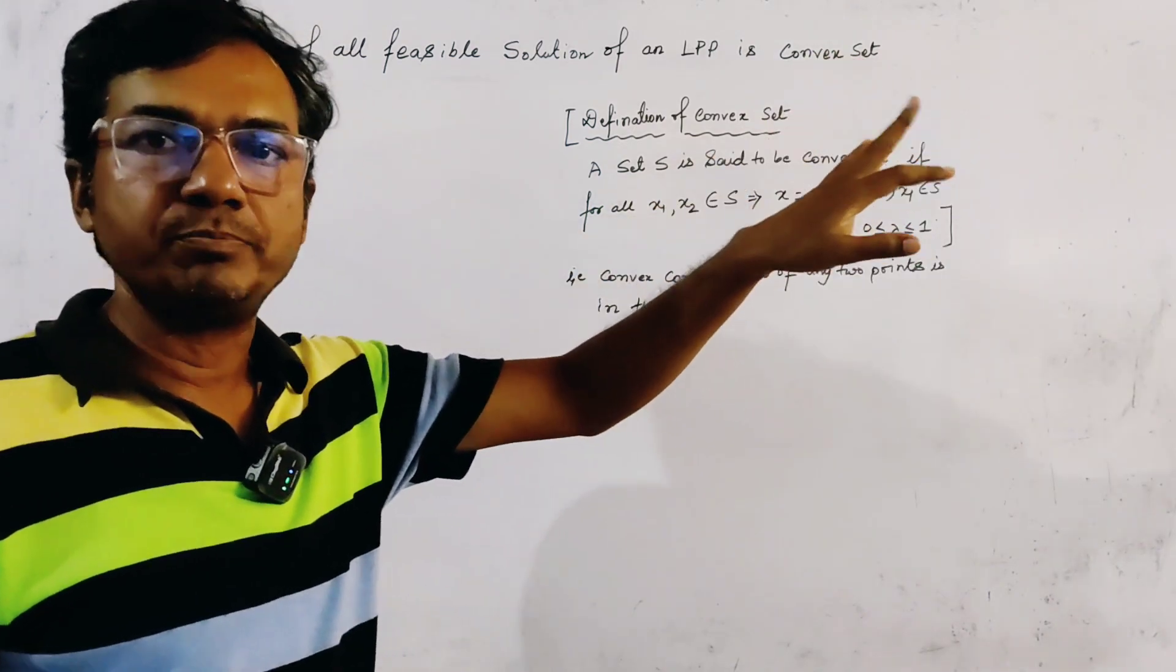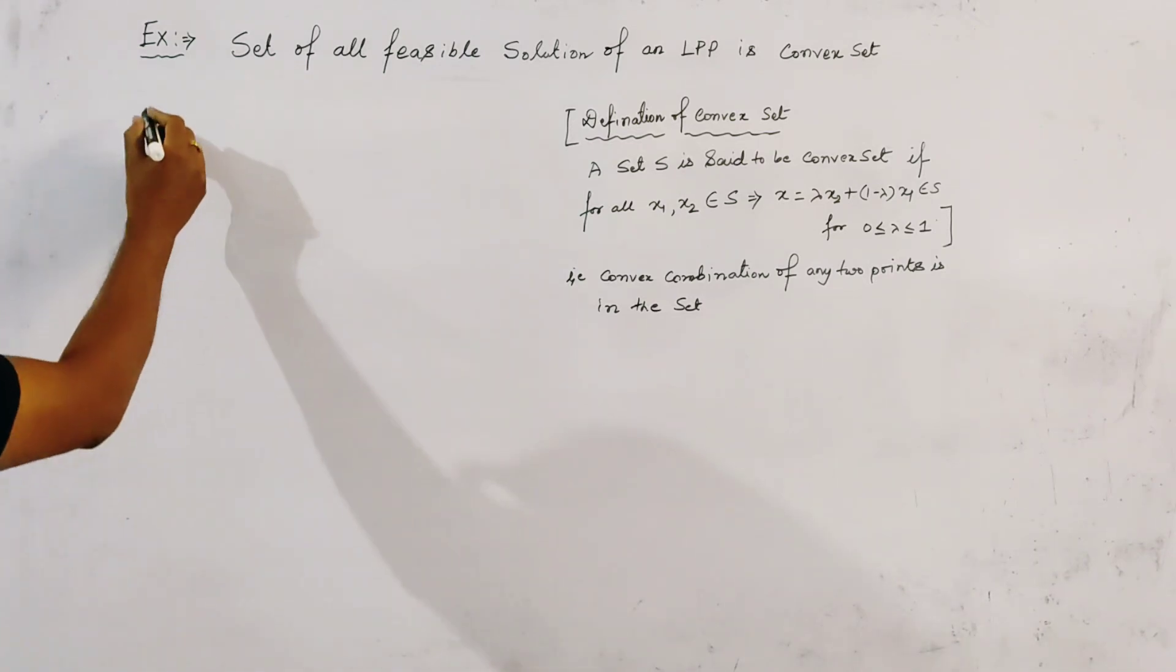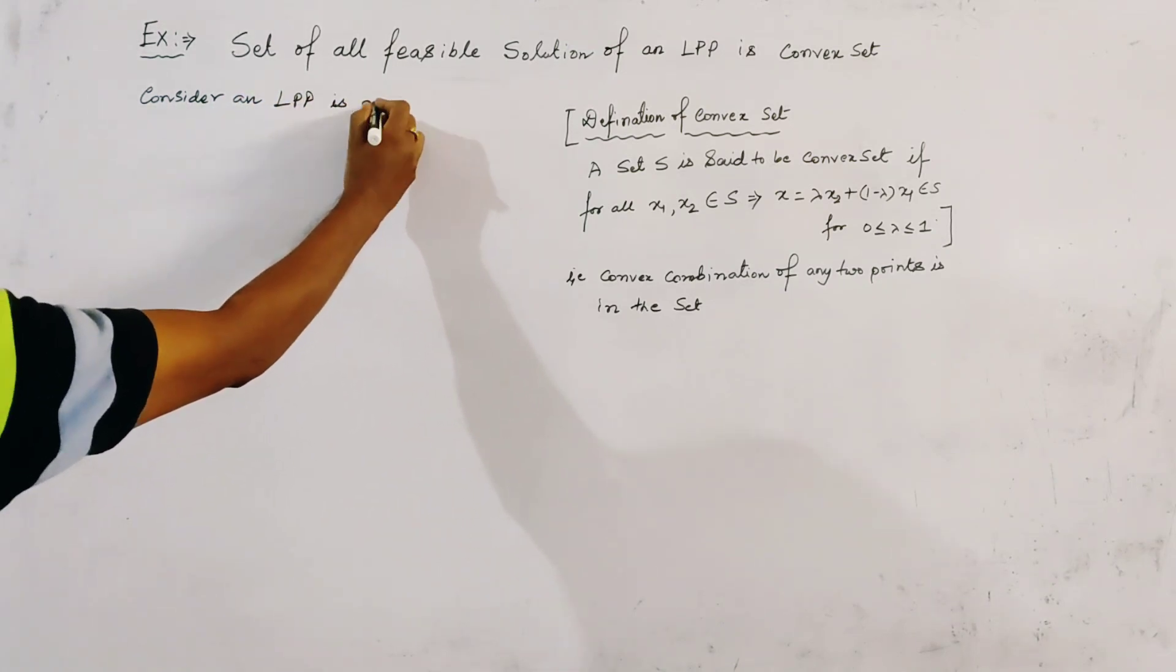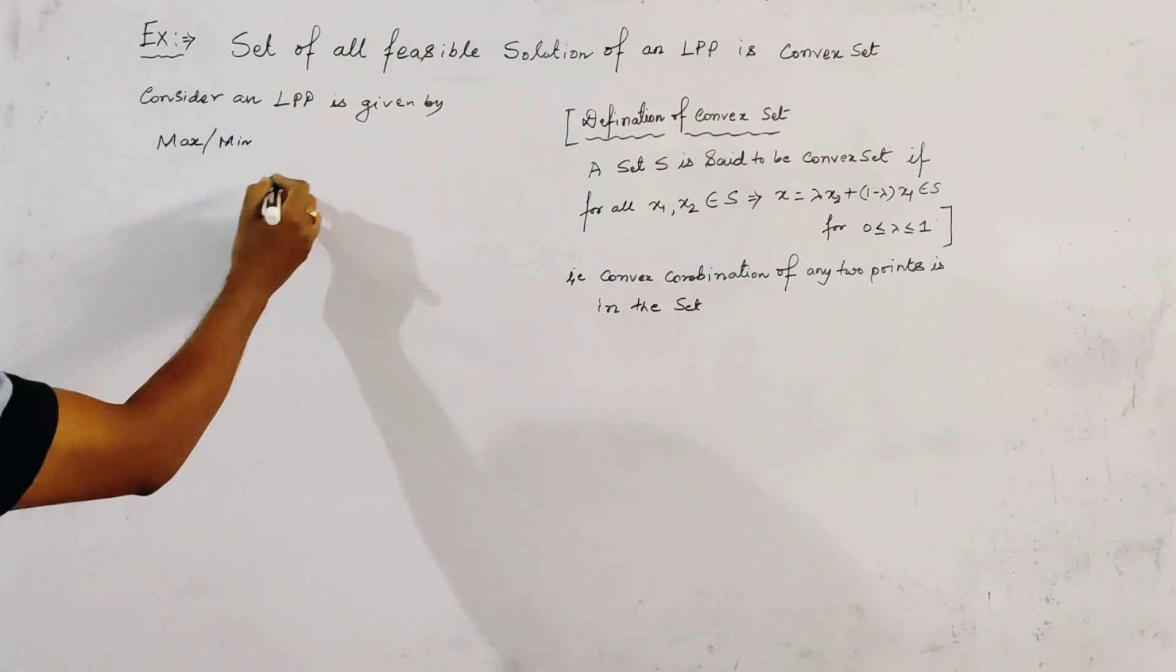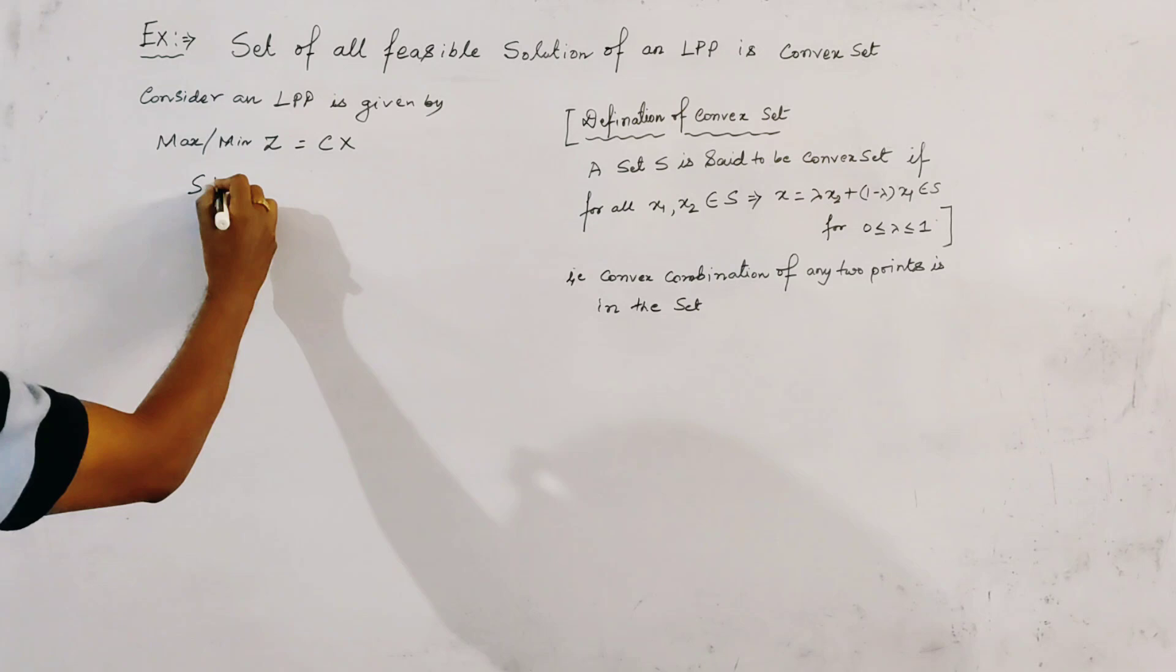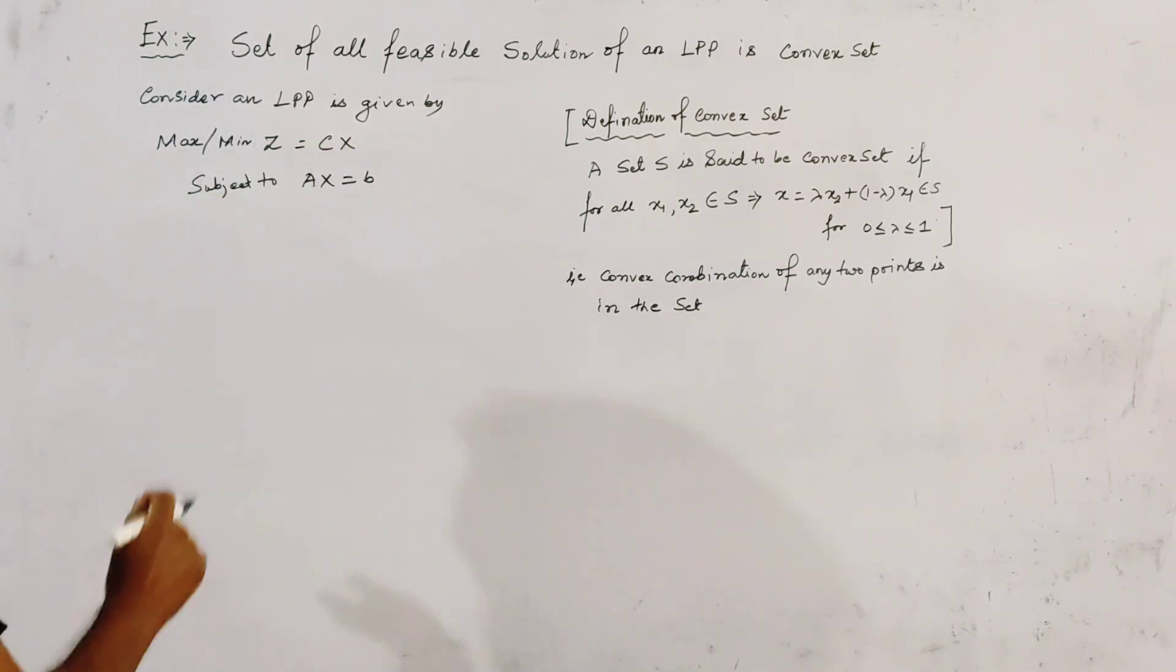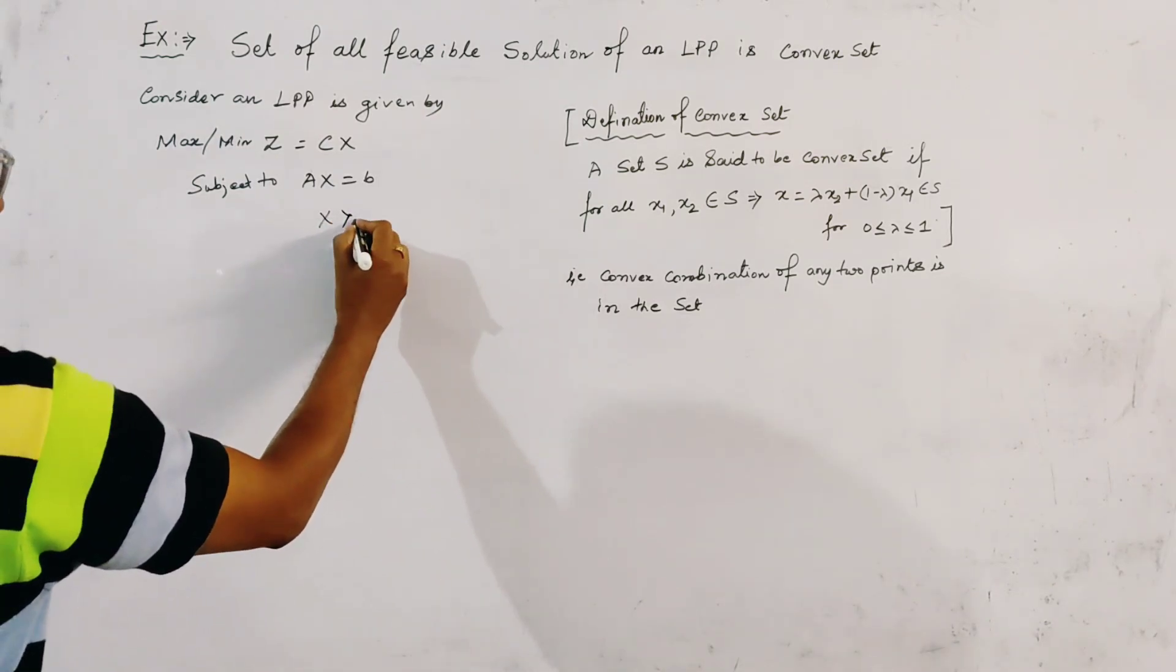Very simple and easy problem. Now we first consider an LPP, which is LPP is given by, we can take this is maximized type or minimized type, where Z is equal to CX, subject to AX is equal to B,